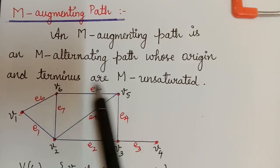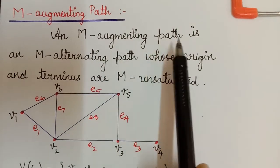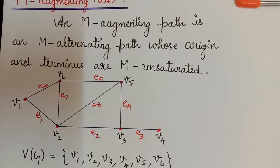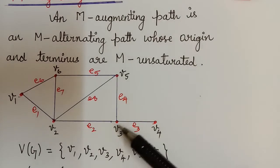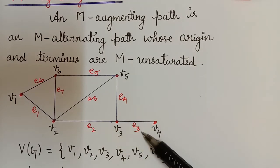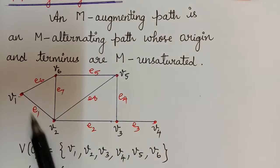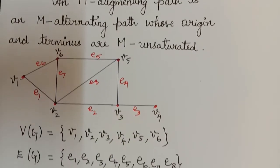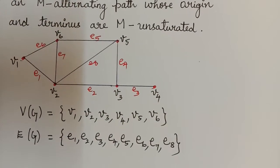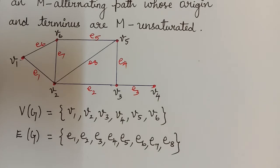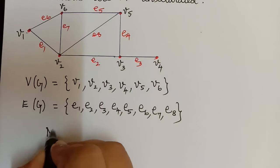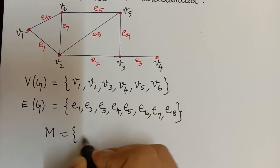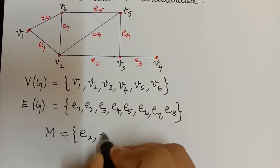Such a path is called an M augmenting path. I have considered the same example here so that you will know the difference between all the definitions. We will take the same example, consider the vertex set and the edge set, and now write a matching M which is equal to {E2, E5}.